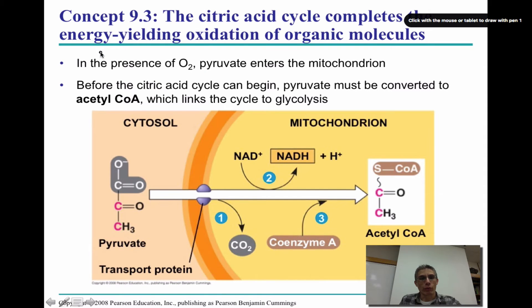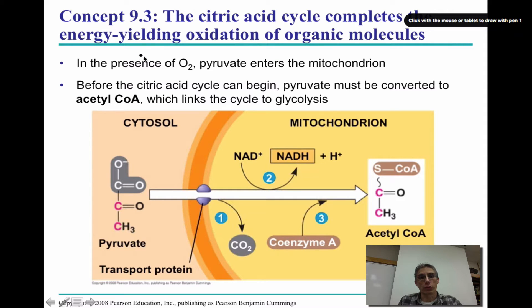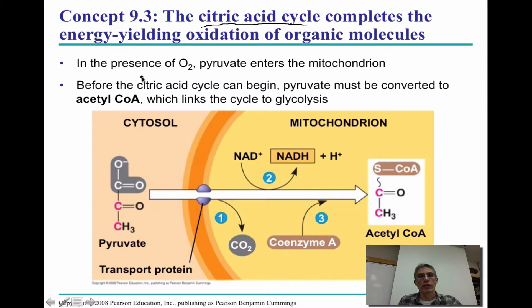Welcome everyone back. This is going to be video number two for chapter nine. We're going to break chapter nine into three videos. The first one dealt with glycolysis. This one is going to deal with the Krebs cycle, also known as the citric acid cycle. The third video is going to deal with the electron transport chain, and we're also going to throw fermentation into that third video as well.